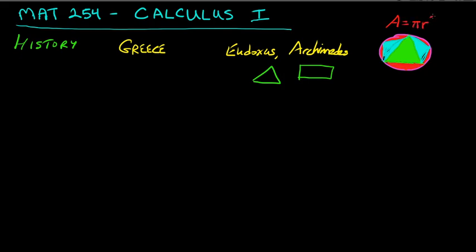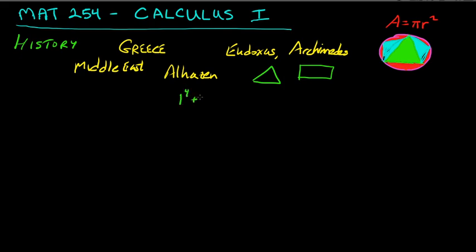The idea was to get closer and closer to the area of the complete circle — which, if you know the radius, is just pi r squared. That's the very beginning of this. This continued further into the Middle East with Alhazan, who worked with sums of powers of integers — adding one to the fourth plus two to the fourth plus three to the fourth, and so on. That's called a series, something you'll see later in the second semester of calculus.